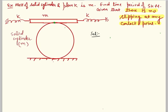Hello dear students, let us discuss a problem based on simple harmonic motion. In this problem, it is given that the mass of a solid cylinder and a plank are the same, equal to m. We are asked: if we slightly displace and release the solid cylinder, what is the time period of SHM of the system? It is also given that there is no slipping at any contact point.